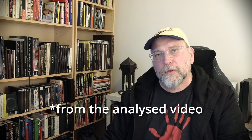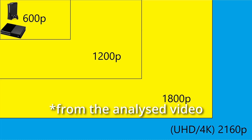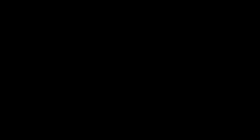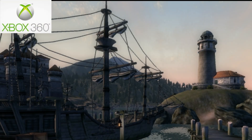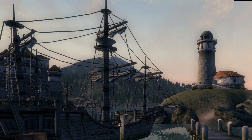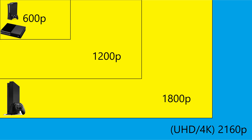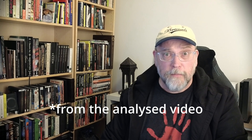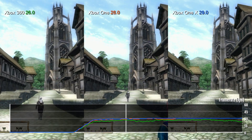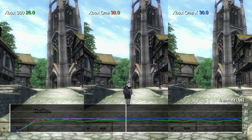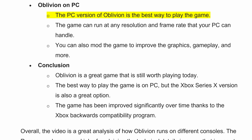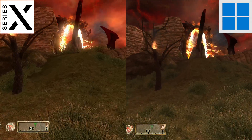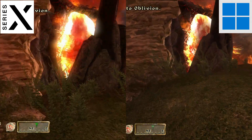It runs at 600p, as I reported in the video. On the Xbox One with backwards compatibility, Oblivion still ran at only 600p and aimed at 30 frames a second. It also says the Xbox One X version of Oblivion is the best way to play the game on consoles — I did not say that, because it is not true. The summary also mentions that I reported Oblivion runs at 60 frames a second on the Xbox One X, which is also not true. It quite clearly runs at 30 frames a second — I measured it and showed the results. It also summarized my video saying the PC version of Oblivion is the best way to play the game, which I did not say. The video was about how the different versions of the game run on the different consoles.